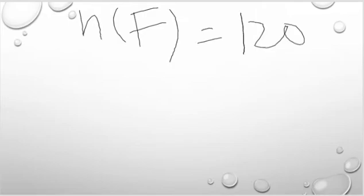We will solve this. n(F) = 120, n(C) = 70, n(F∩C) = 60. We use the formula n(F∪C) = n(F) + n(C) - n(F∩C).